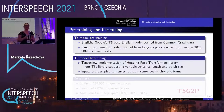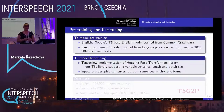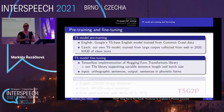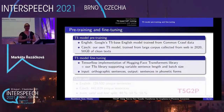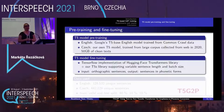The first step of training a T5 model is pre-training on a huge corpus. For English, we used Google's T5-based English model trained from Common Crawl data. For Czech, we trained our own T5 model from a large corpus collected from the web in 2020, containing about 50 gigabytes of clean text. After that, there is fine-tuning of the T5 model for a specific task — in our case, fine-tuning for G2P.